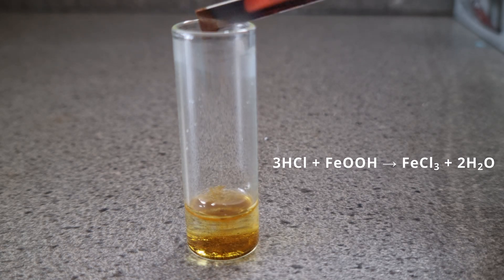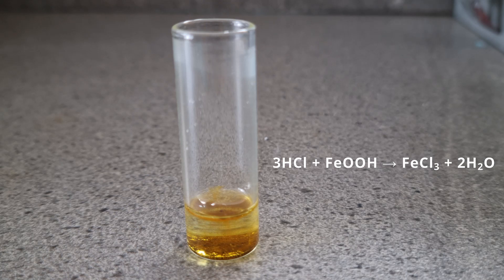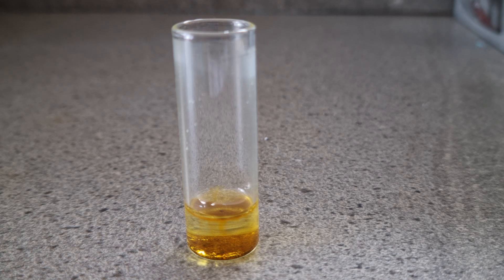We start by adding iron oxyhydroxide to hydrochloric acid. This forms an orange solution which should contain iron 3 chloride.